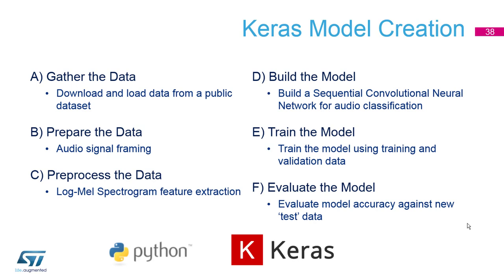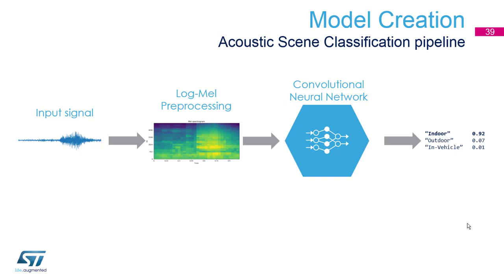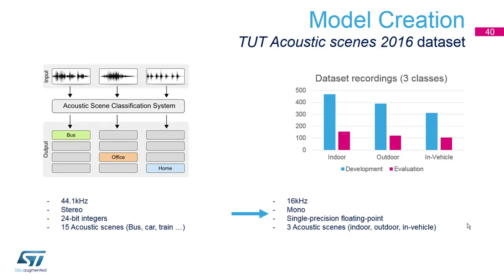The full pipeline for audio scene classification is you have your input signal in the time domain that's converted to frequency domain and then further to the mel domain using the log mel preprocessing. This is called the feature extraction. Those features are then scaled and fed to the convolutional neural network where we get an output confidence of each class. This is called the softmax layer, typically found in classifiers.